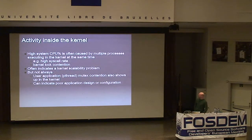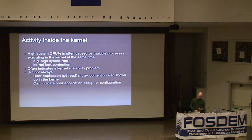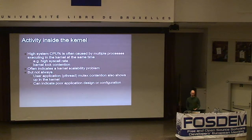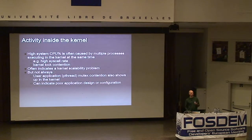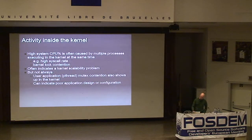Another thing that can show up on your workloads, hopefully rarely, is high lock contention on kernel mutexes. This can indicate a kernel scalability problem, or it can indicate an application problem — for example, if the application has high lock contention on its pthread mutexes. These will show up in the kernel because of the way the FreeBSD userland lock implementation works: in some cases it will actually enter the kernel to block. So it can indicate either a kernel or a userland problem.